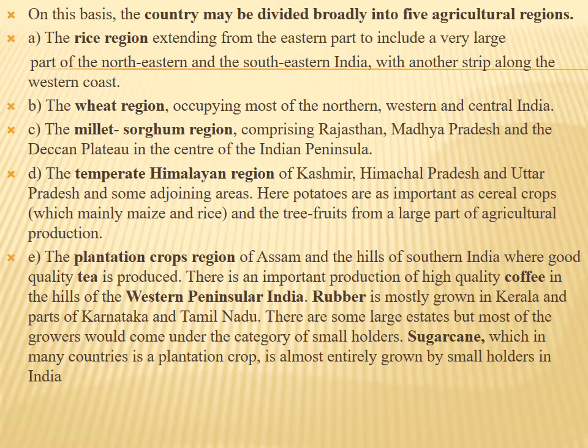The wheat region occupies most of the northern, western, and central India. The millet and sorghum region comprises Rajasthan, Madhya Pradesh, and the Deccan Plateau in the center of the Indian Peninsula.